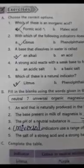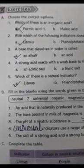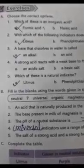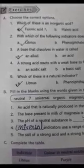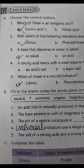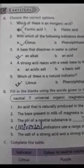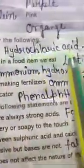Good morning students, hope you all are well. We are taking a revision of Chapter 5. Let's start. Give an example for the following. First: a mineral acid. Hydrochloric acid is the example of a mineral acid.